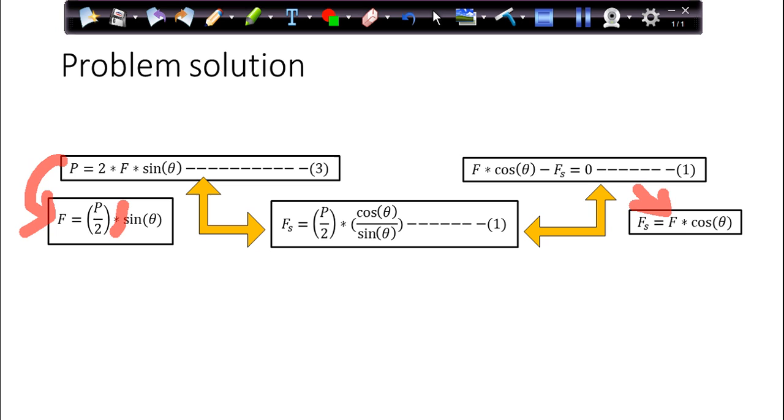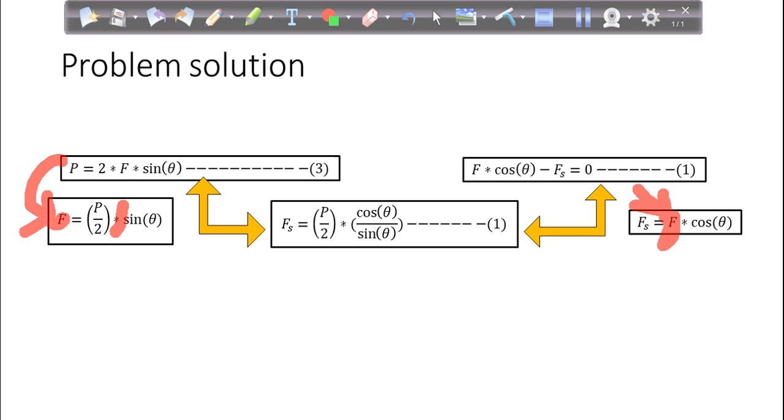FS equals F cos theta and from this you are extracting F that F equals P by 2 sin theta. So FS equals P by 2 times cos theta by sin theta. Now simply substitute this F here. So FS equals P by 2 into cos theta by sin theta. Now you have, we have this equation FS equals K into U. So you have the value of FS. You have K. You can find the value of U. So U will be P by 2K into cos theta by sin theta.